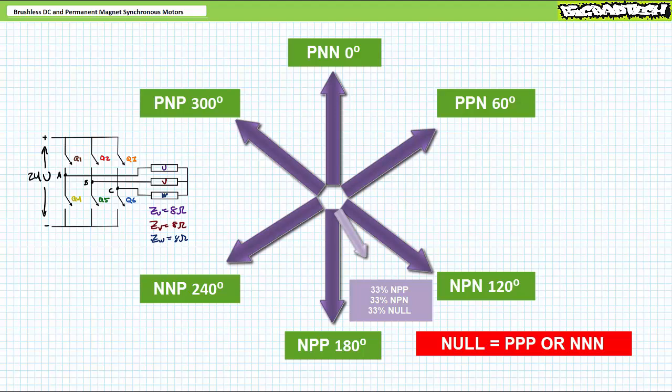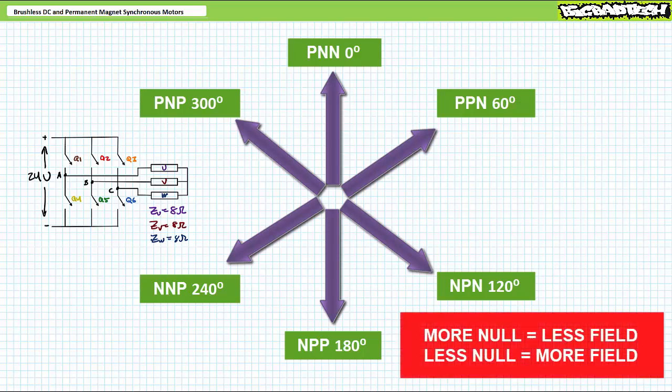This nothing or null state, depending upon implementation, might be known as PPP, where all the positive switches close, or NNN, where all the bottom switches are closed. By increasing the ratio of the null state in proportion to the two nearest vectors, we can decrease stator field strength. Conversely, by decreasing the ratio of the null state in proportion to the two nearest spatial vectors, we can increase stator field strength.